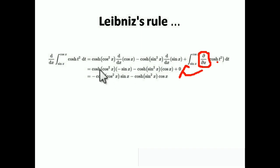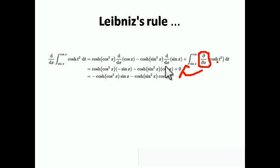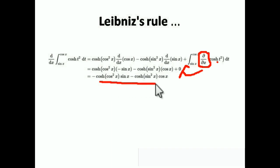Now simplify: cosh(cos²x) times the differentiation of cos x, which is −sin x, minus cosh(sin²x) times the differentiation of sin x, which is cos x. So the final answer is: −cosh(cos²x)·sin x − cosh(sin²x)·cos x.